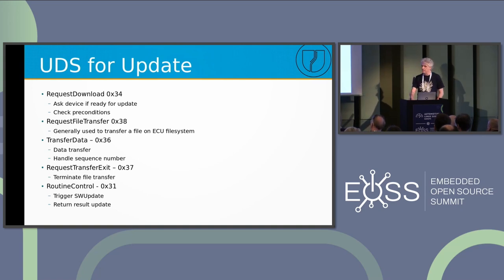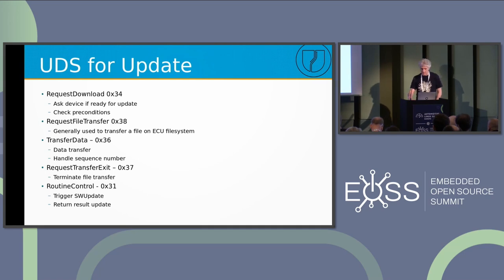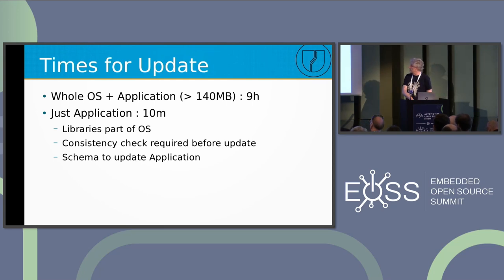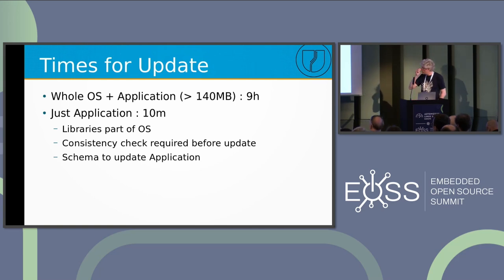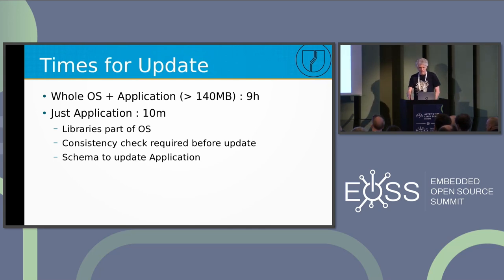At this point the update is already installed by SWUpdate. There's also a request because the activation of the software should be done in a controlled way — the system does not reboot automatically. There's an additional UDS command called Routine Control, which signals that the data is established and it's time to restart the application. To give you some timing: if everything is transferred, it requires nine hours for a full update. This is only used in a vehicle workshop for service. The normal way is to transfer just the application, which takes ten minutes.